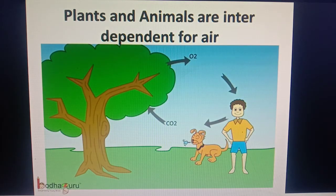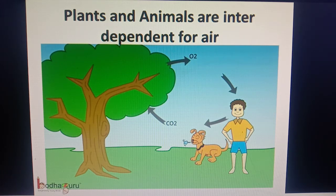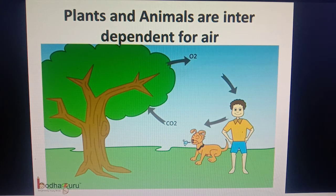The most important thing to remember is, plants and animals, including us human beings, are interdependent on each other for air. The plants need the carbon dioxide for their preparation of food and release the oxygen gas. On the other hand, the animals, including us human beings, take in oxygen and give out carbon dioxide. Thus, we see, the biotic components are interdependent.